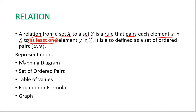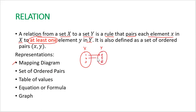There are different representations of relations. One is the mapping diagram form. For example, we have set x with elements 1, 2, and 3, and set y with elements 4, 5, and 6. Element 1 in x is paired to element 4 in y, element 2 is paired with element 5, and element 3 is paired with element 6. This is considered a one-to-one relation.